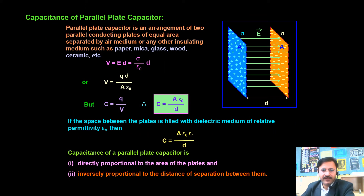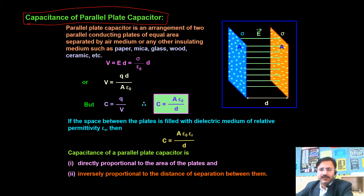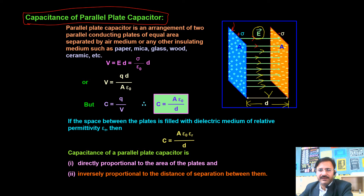The next topic is capacitance of a parallel plate capacitor. There are two plates: plate A is positively charged with surface charge density +σ, and in front of it another plate is negatively charged. The green lines show the electric field lines, and this electric field between the plates is a uniform electric field of magnitude E. The distance between the two plates is d.